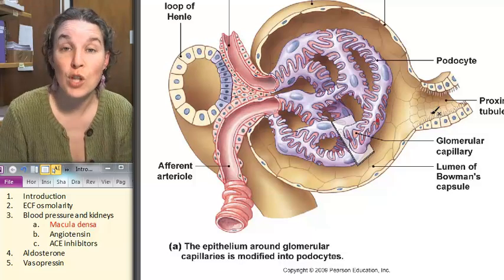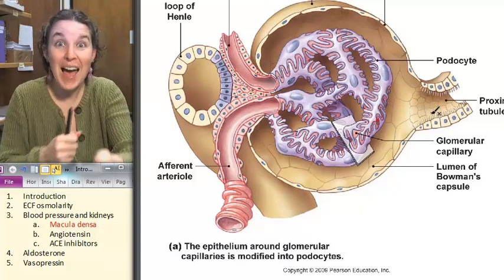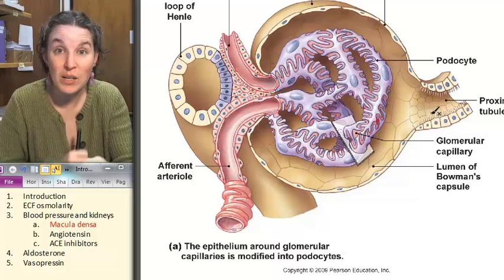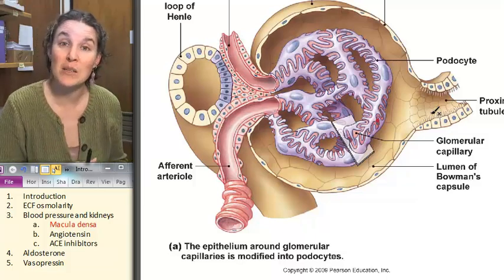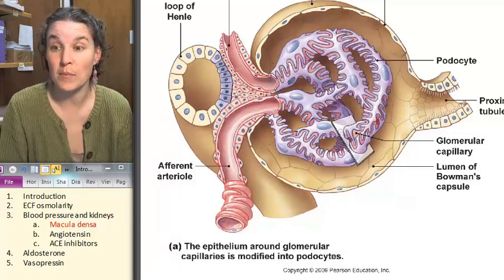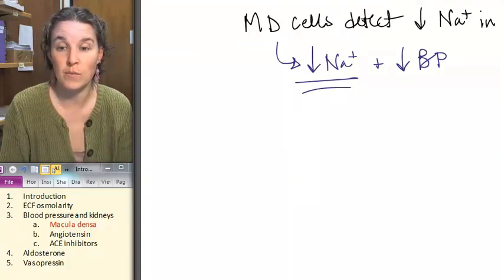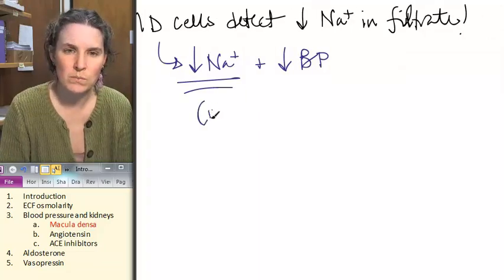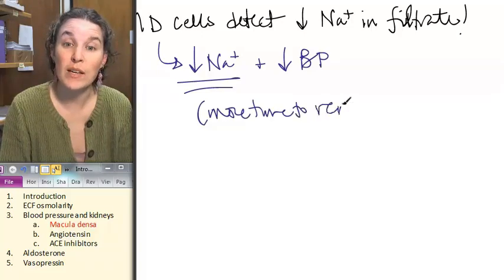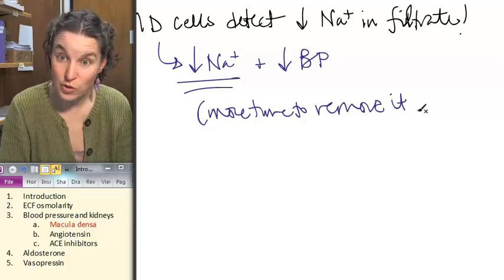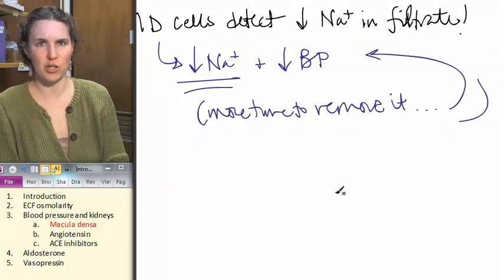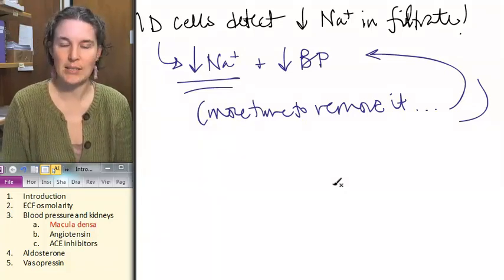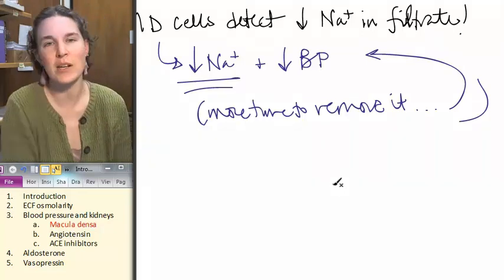If the filtrate moves slower through the nephron, then there is more time for the cells in the various parts of the nephron to pull sodium out and reabsorb it into the blood. The idea being if there's low sodium, it means that there was more time to remove it from the filtrate, which means there must have been low blood pressure. Do you see that jump? That's the hypothesis about why these macula denser cells are able to detect blood pressure to increase blood pressure by monitoring the filtrate.